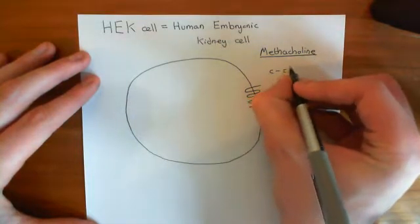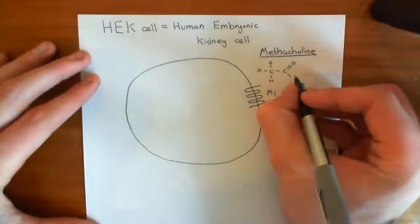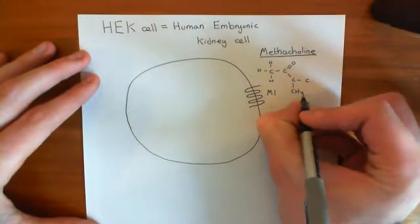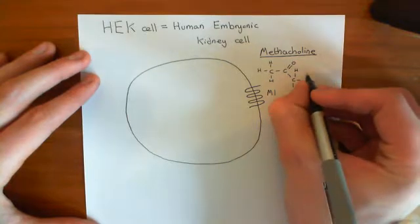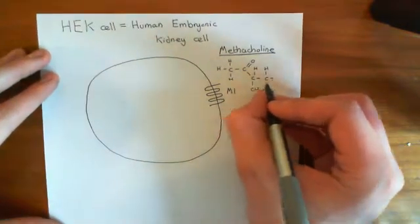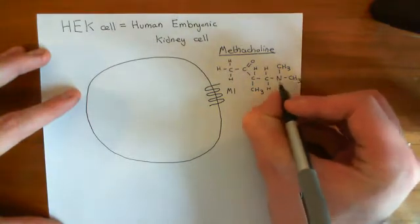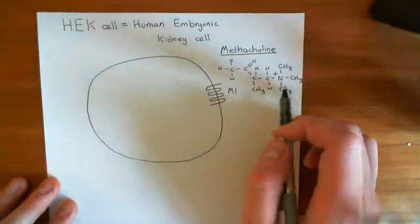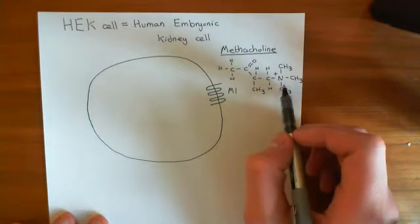Methacholine has this structure: it has an acetyl group, then two carbons coming off, and off one of those carbons — which gives it its name — it has a methyl group. That's why it's called methacholine, because of this methyl group. Then off the adjacent carbon you have two hydrogens, and finally a nitrogen bonded to three methyl groups, giving the nitrogen a positive charge. This is because nitrogen has formed one more bond than it wanted to, sharing both of its electrons with the carbon in a coordinate bond.